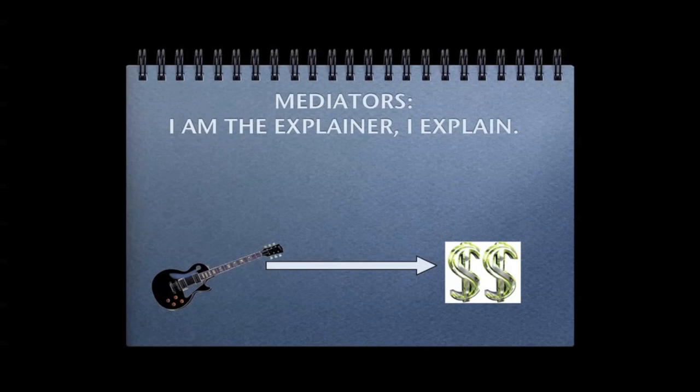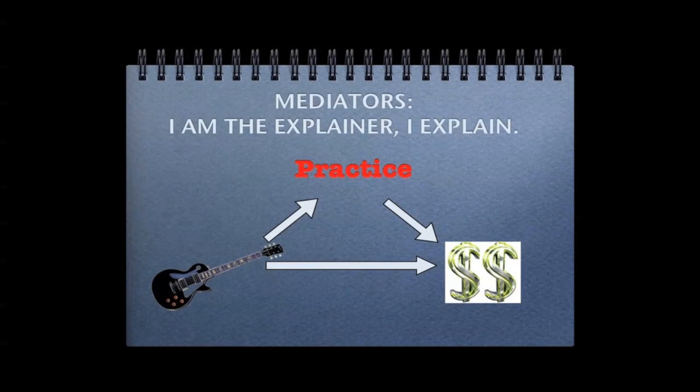So, there must be some other factor or variable that explains why it led to a record deal. Perhaps receiving a super awesome Les Paul guitar makes you really motivated to practice a lot. And practicing a lot eventually got you that super lucrative record contract. So, your response to receiving the guitar, practicing tons and tons, explained the relationship between receiving the guitar and getting the super lucrative record contract. It was a mediator.